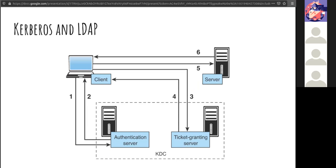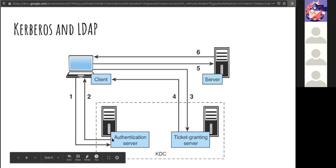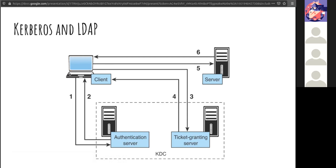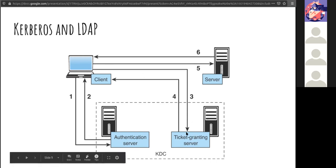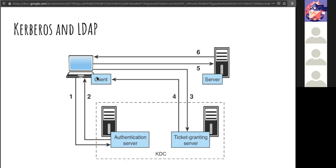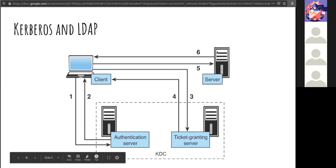The six steps for Kerberos: Step one — the client sends a request to the authentication server within the KDC. Step two — the authentication server sends a session key and a ticket-granting ticket (TGT) to verify the client's identity. Step three — the client sends that TGT to the ticket-granting server. Step four — this server generates and sends a ticket back to the client. That ticket is then presented to the resource server, which sees it's a legitimate ticket and grants the client access.